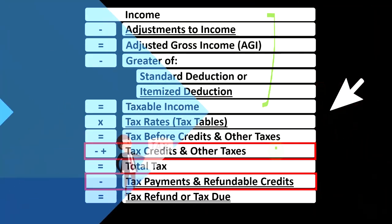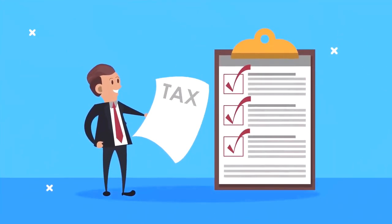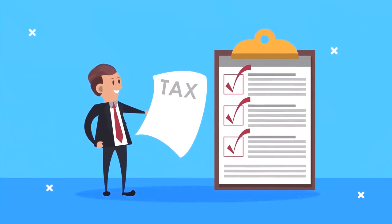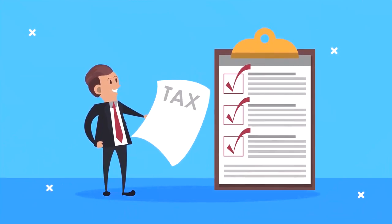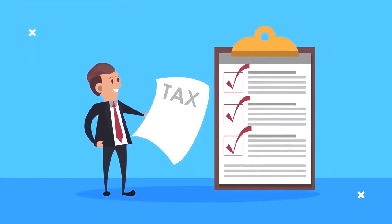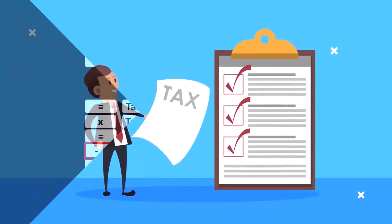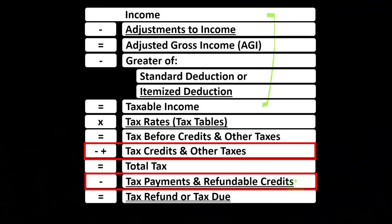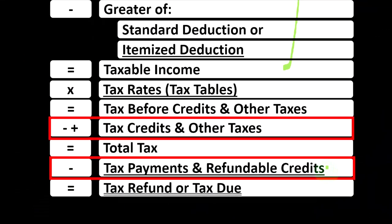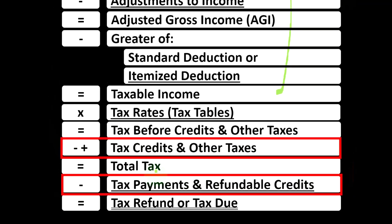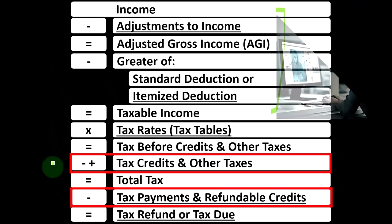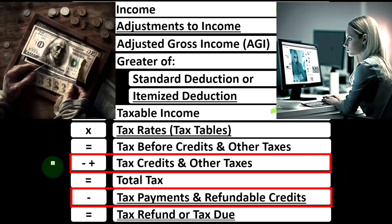After reaching tax before credits, we deal with credits and other taxes — for example, possibly self-employment tax. Then we address amounts already paid in, in the form of estimated tax payments or withholdings, to finally arrive at either a tax refund or tax due.